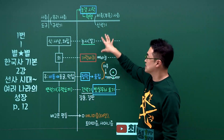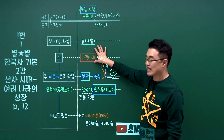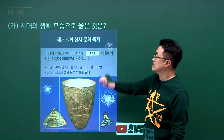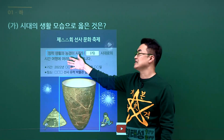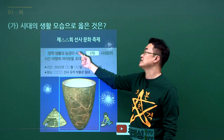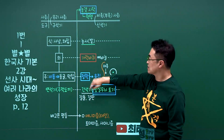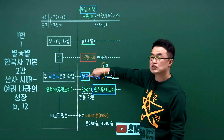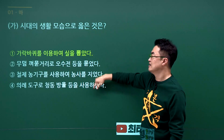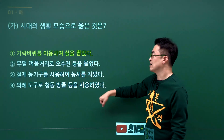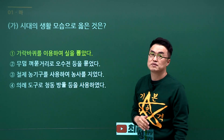신석기 시대 문제입니다. 정착 생활했고 빗살무늬 토기 만들었고 가락바퀴도 사용했다는 내용입니다. 문제에서 '이 시대의 생활 모습'으로 빗살무늬 토기가 나왔으니 신석기 시대임을 알 수 있고, 정답은 가락바퀴입니다. 오수전은 철기 시대, 철제 농기구도 철기 시대, 청동방울은 청동기 시대 이후입니다. 정답은 1번입니다.